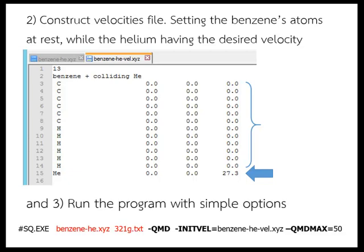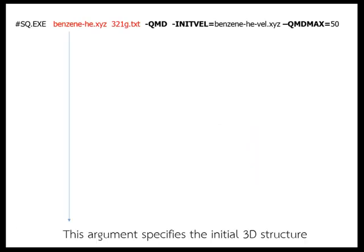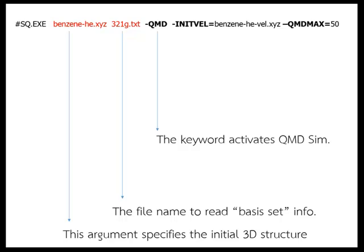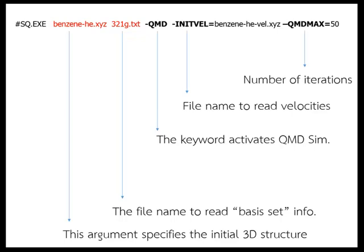And three, run the program with simple options. This argument specifies the initial 3D structure. The file name to read basis set information. The keyword activates QMD simulation. The file name to read velocities. And the number of iteration.